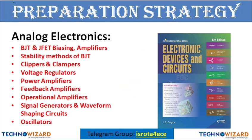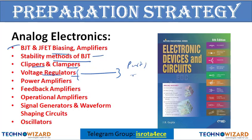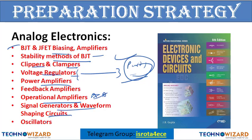For analog electronics, the topics you will cover are: BJT and FET biasing, BJT as an amplifier, stability methods of BJT, clippers and clampers, voltage regulators, Zener diode as a voltage regulator — I have made videos on this in part one and part two. Also: power amplifiers, feedback amplifiers, op-amp (the most important topic), signal generator and waveform shaping circuits, and oscillators.